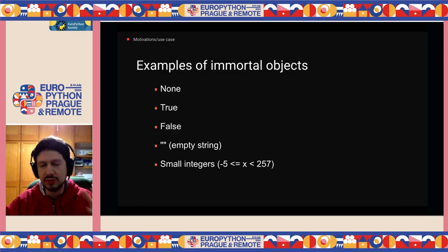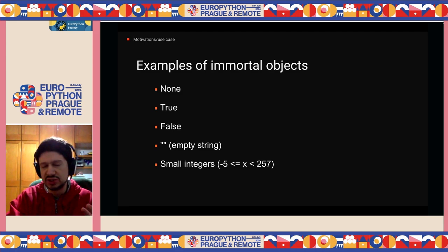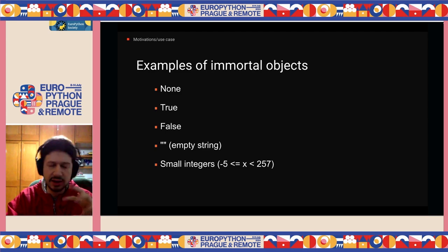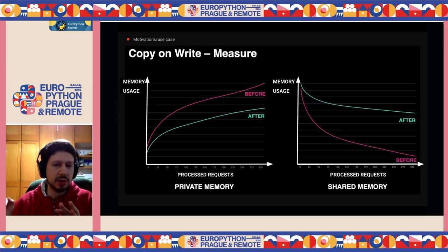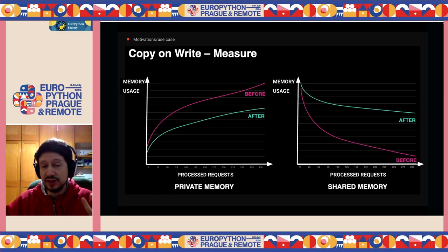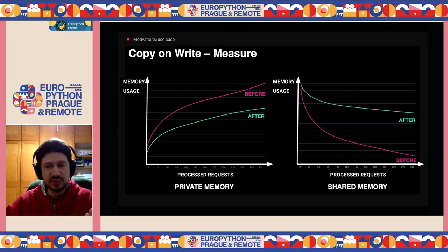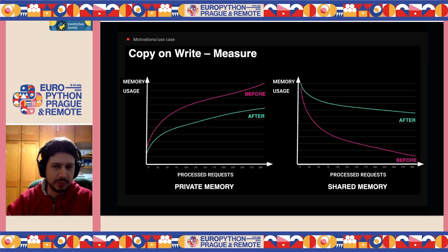Some examples of immortal objects are None, True, False, empty string, and small integers. If you check the reference count on Python 3.12 and later for these, you should get just one as the reference count field. There are other objects — specifically for Instagram's case — but these are the common ones you see on a daily basis. After this implementation, they noticed a decrease in memory usage as the number of requests went up, and an increment in shared memory. Most importantly, for the very first time, they had truly immutable objects that wouldn't change at all — these objects can bypass the garbage collector, the GIL, threads, processes — you can try to change them, you won't be able to.